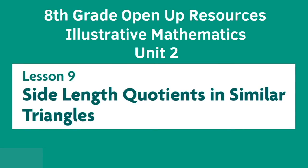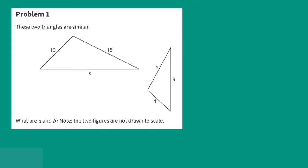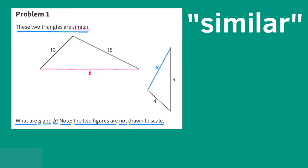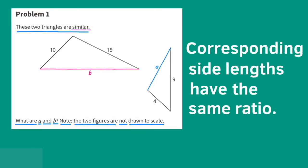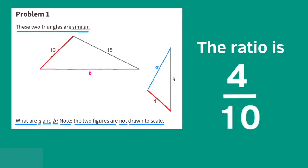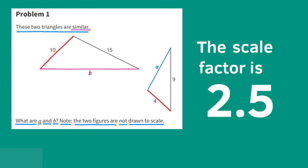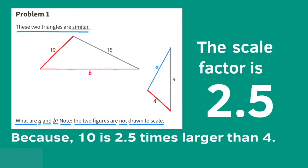Eighth grade Open Up Resources, Illustrative Mathematics, Unit 2, Lesson 9: Side Length Quotients in Similar Triangles. Problem number 1. These two triangles are similar. What are A and B? The side length of four on the right triangle corresponds to the side length of ten on the left triangle. The ratio is four to ten, and the scale factor is two and five tenths (two and a half), because ten is two and a half times larger than four.